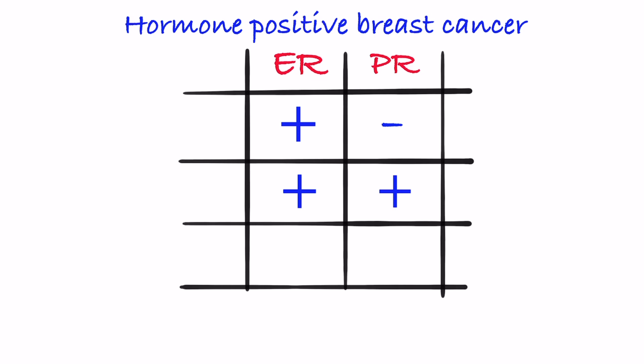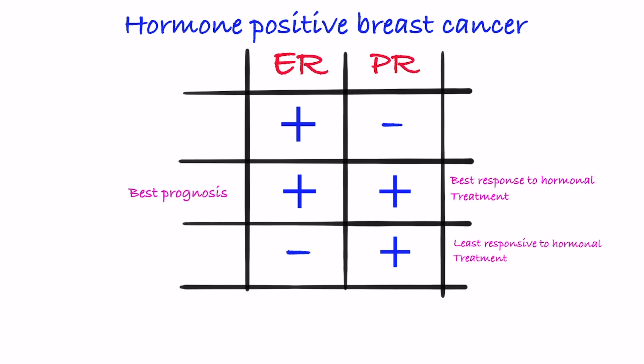Hormone-positive breast cancer can be classified based on the positivity of estrogen and progesterone receptors. The best response to hormonal drugs is seen when breast cancer is both ER and PR receptor positive, giving the best prognosis. The least response to hormonal drugs is in tumors that are only PR positive.